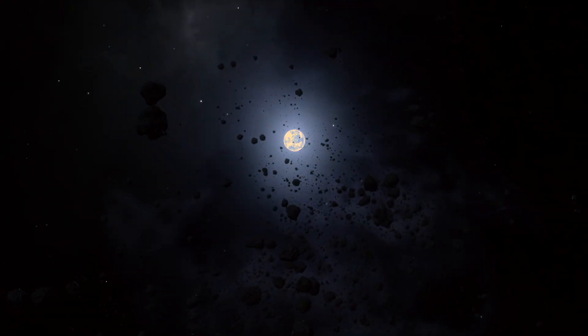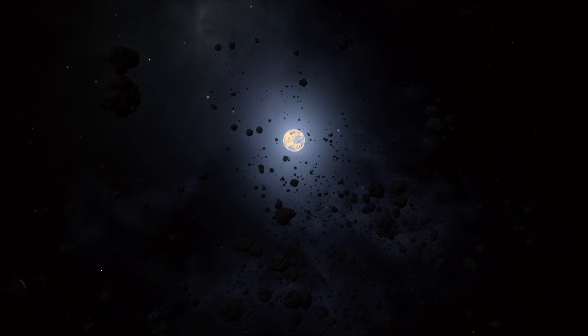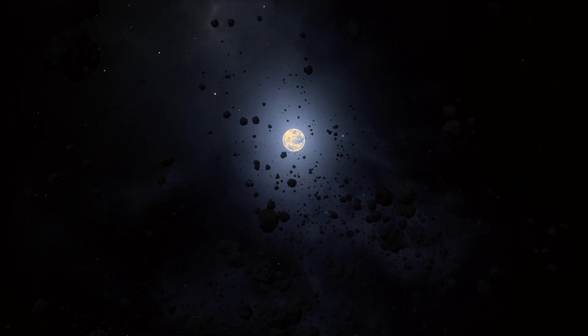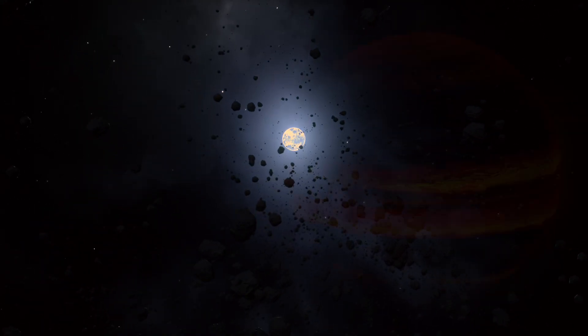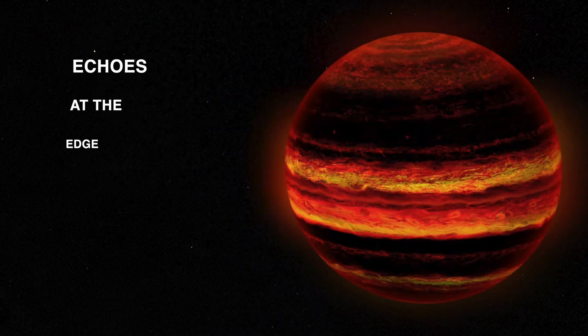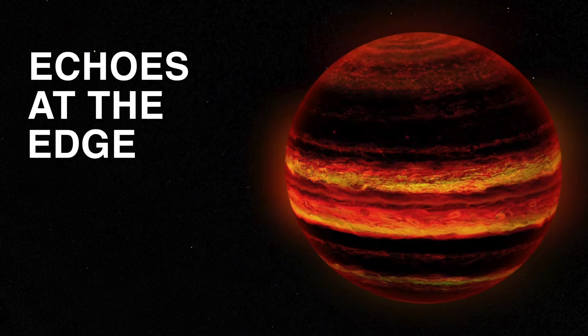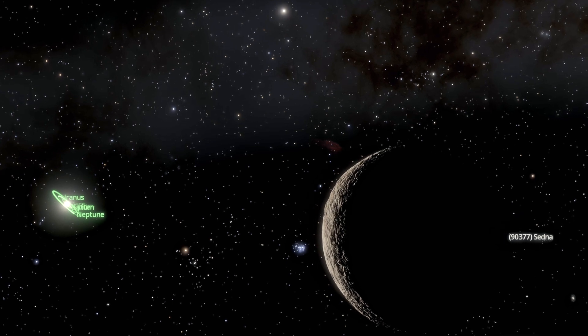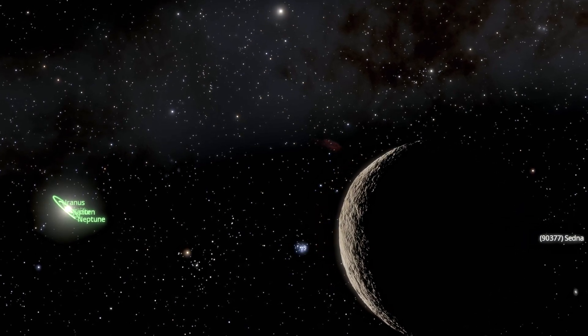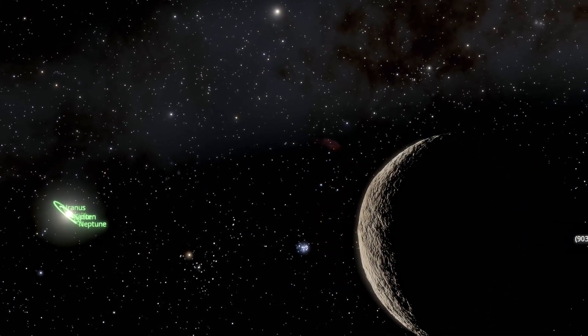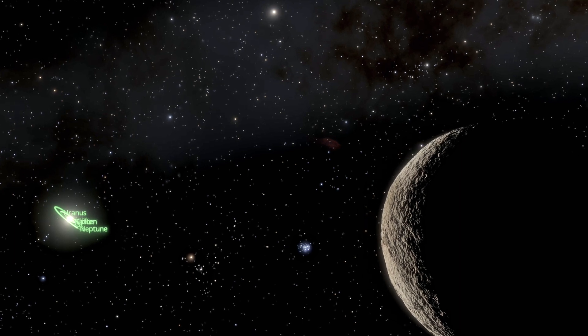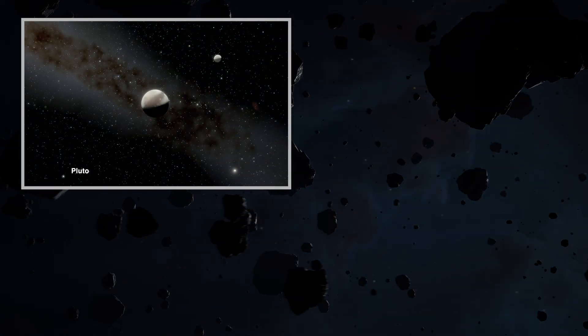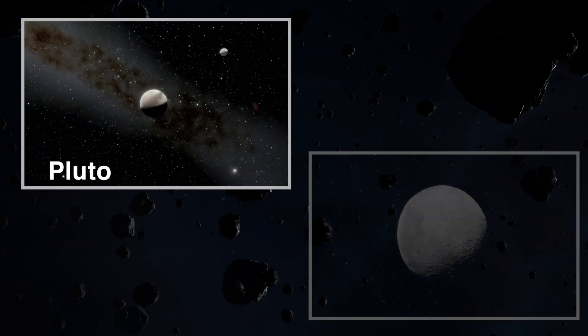So the question shifted. Not where is Nemesis now, but if it was here, what traces did it leave behind? When you look towards the edge of the solar system, you start to see the clues, scattered signs of what Nemesis may have left behind. Take the Kuiper Belt, a ring of icy objects beyond Neptune, home to Pluto and other frozen worlds. But strangely, it doesn't stretch on forever.